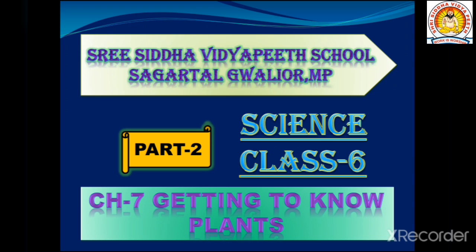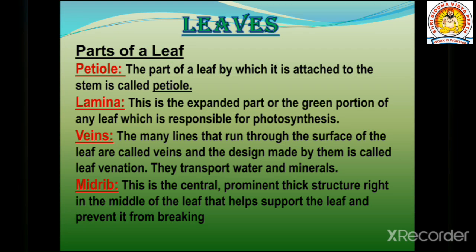Today we are going to study about the second part of the shoot system, which are leaves. The first part of a leaf is the petiole — the part by which it is attached to the stem. The second part is the lamina, which is the expanded green portion of any leaf responsible for photosynthesis.